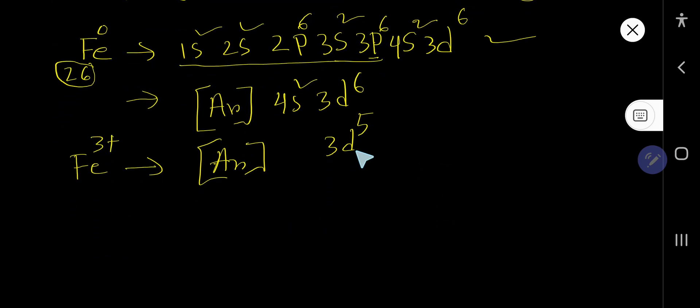That is, in the D subshell, you are getting five electrons. You can write D here. Good. Now you need to use the box method to write the electron configuration of this 3D subshell.